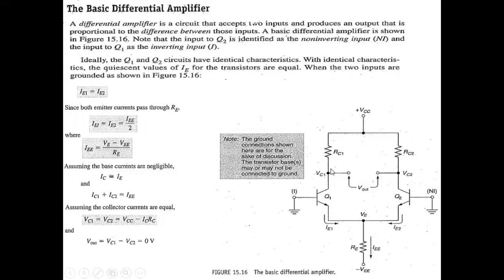We have the general assumption that IE1 and IE2 are nearly equal to each other. On the basis of this assumption, we can say that IE1 plus IE2 is equal to IE. Because IE1 and IE2 are approximately equal to each other, IE1 plus IE2 equals IE.